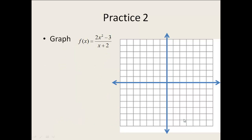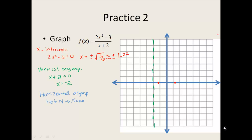Now we're going to look at how to graph one of these. Our first graphing one is 2x squared minus 3 divided by x plus 2. Find your x-intercepts, vertical asymptotes, and horizontal asymptotes. The x-intercepts are x equals plus or minus the square root of 3 over 2, which is about positive and negative 1.22. The vertical asymptote is at negative 2 — drawn as a dotted line since it's a guideline, not part of the actual graph. Since degree is bigger on top, there is no horizontal asymptote.